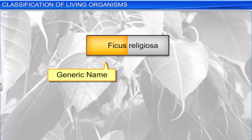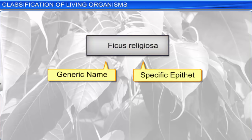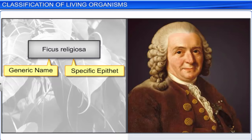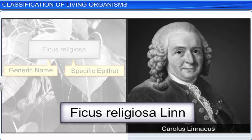This system of representing a name with two components is called Binomial Nomenclature, and was devised by Carolus Linnaeus, also known as the father of modern taxonomy. Sometimes, the name of the author who first described the species is written at the end of the specific epithet. For example, in Ficus religiosa Lin, Lin is the abbreviated name for Linnaeus.